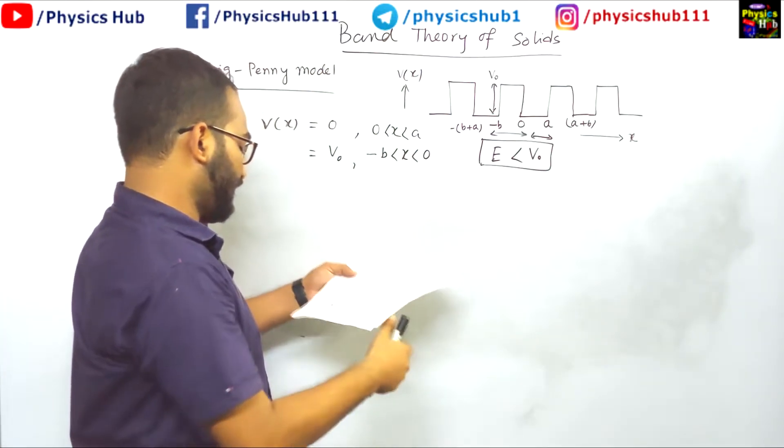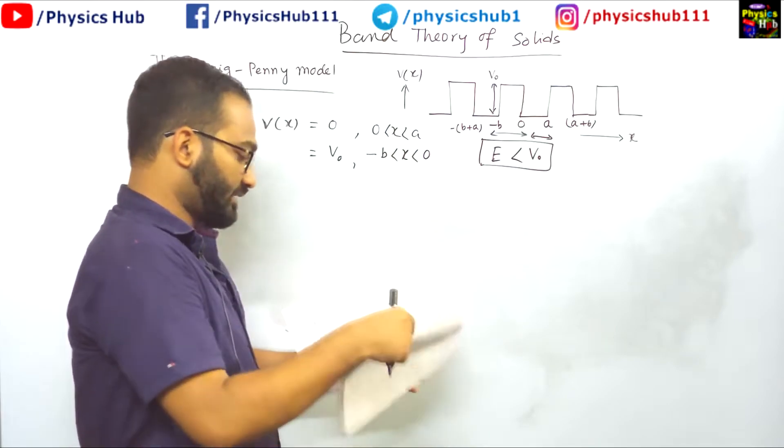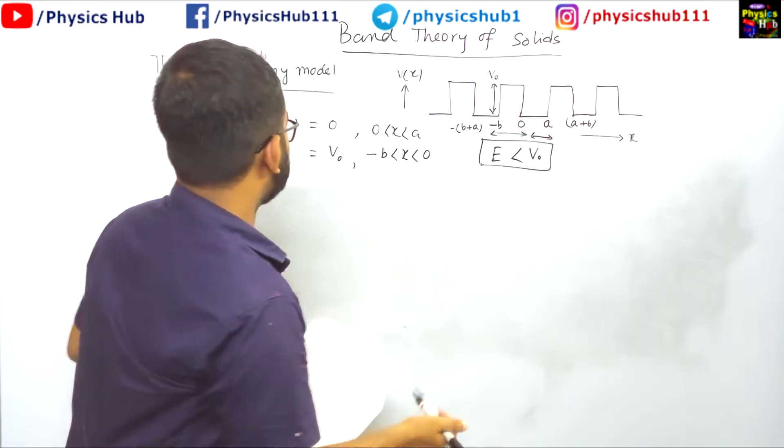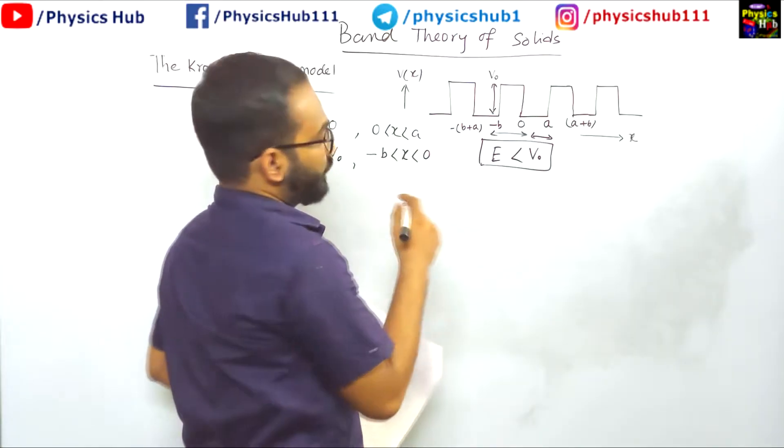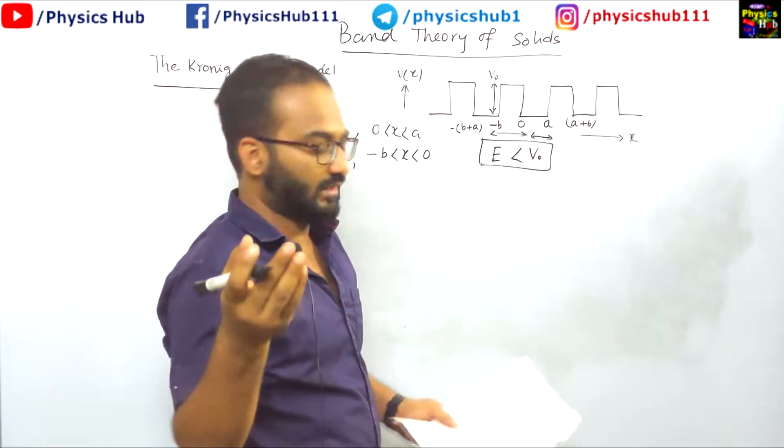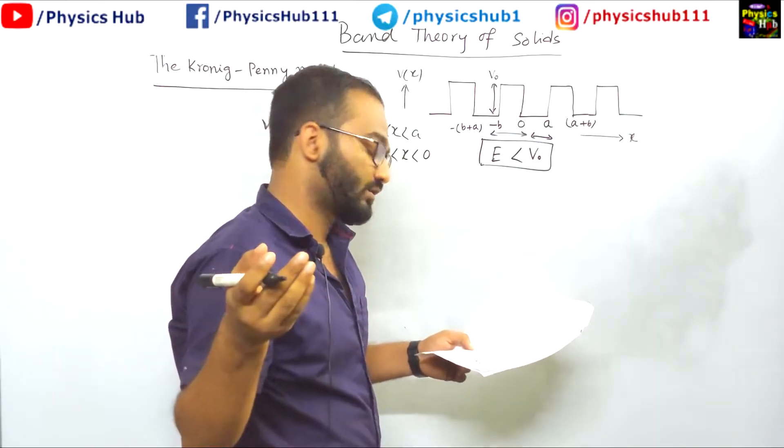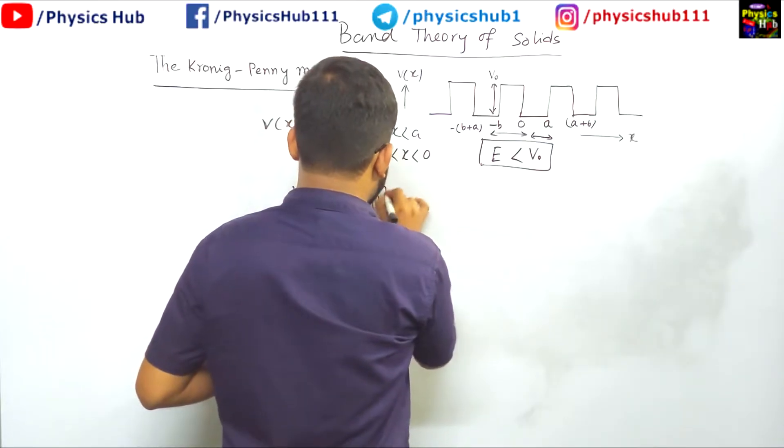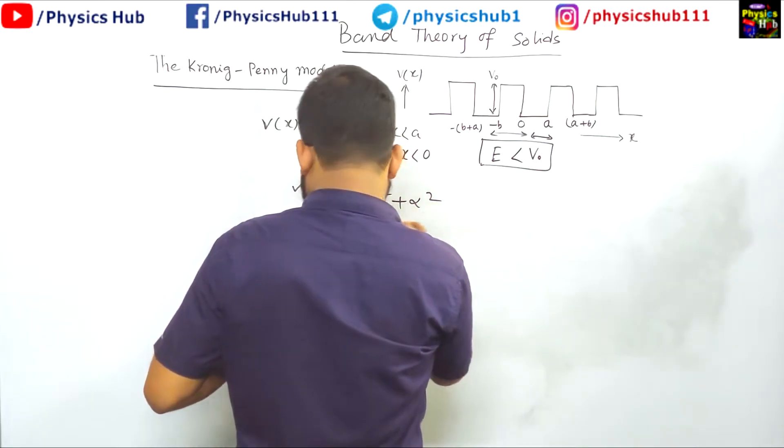The final expression. And from that we will try to understand the origin of bands. Okay, so ultimately you will get an expression like this. I have already defined the quantities alpha and beta, and your final expression after utilizing the property of wave function and its differential, first differentiation continuity and other things, you will end up getting this equation: